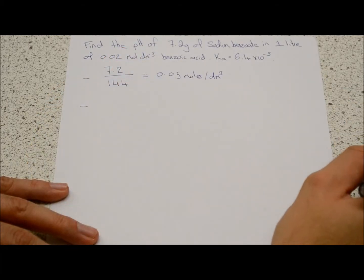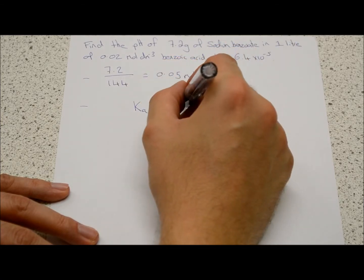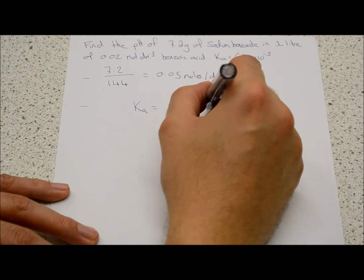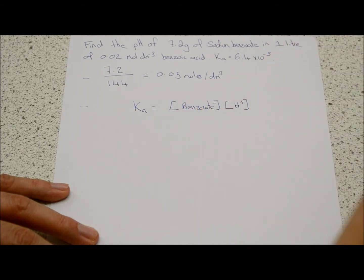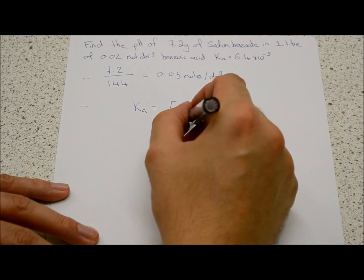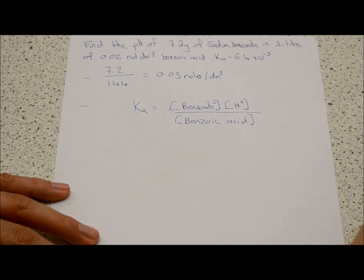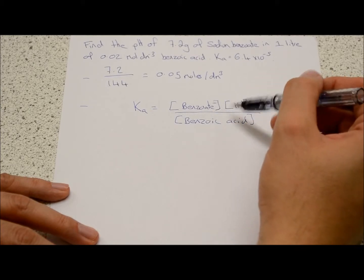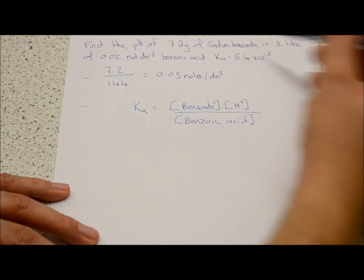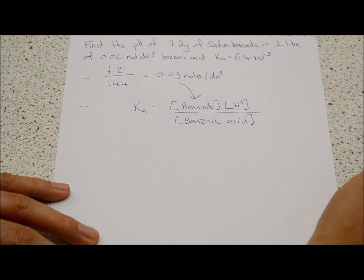Next we set up the equilibrium expression: Ka equals the concentration of benzoate ions multiplied by H⁺ ions, divided by the concentration of benzoic acid. The key assumption for a buffer is that because the dissociation from benzoic acid is so small, we assume all the benzoate ions come from the salt, so we use the salt concentration for benzoate ions, and the benzoic acid concentration comes from the question.